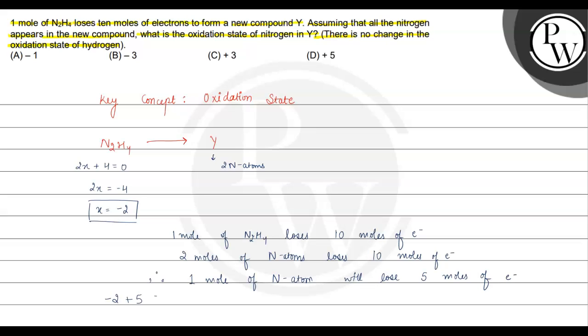So minus 2 plus 5 equals plus 3. The oxidation state increases from minus 2 to plus 3 because 5 electrons are lost. So the final answer is plus 3.